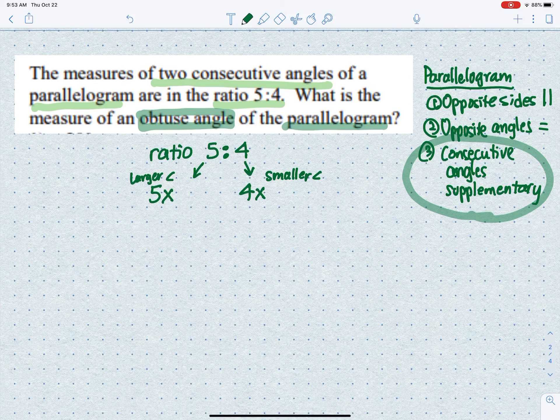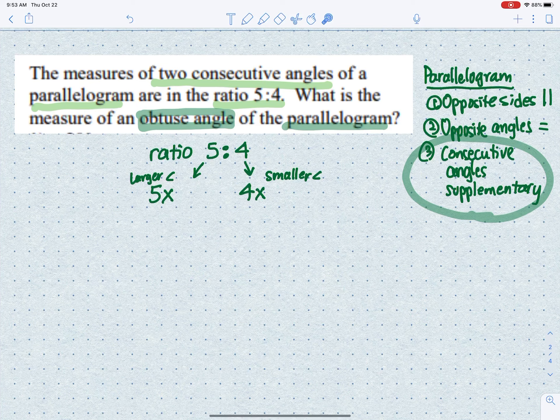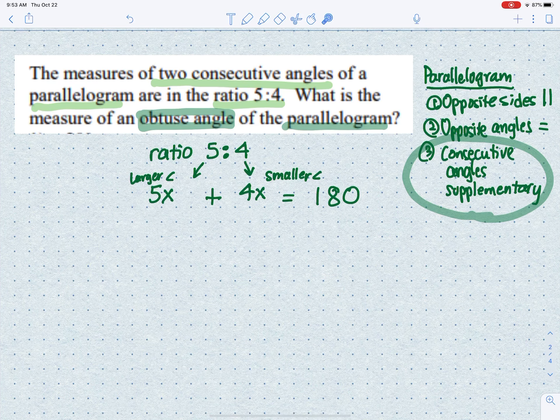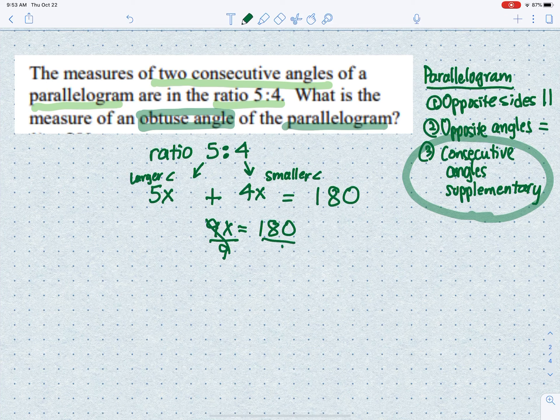Keep in mind, consecutive angles are supplementary, so these two angles add to give us 180 degrees. We combine like terms: 5x plus 4x equals 9x. To solve for x, divide both sides by 9, so x equals 20.